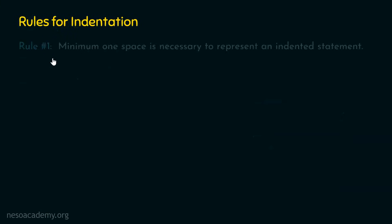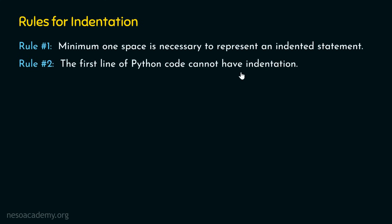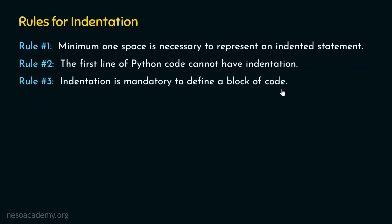Following are the rules of indentation. Rule one: minimum one space is necessary to represent an indented statement. You don't need to add four spaces every time — one space is sufficient, but it is mandatory. Rule two: the first line of Python code cannot have indentation; every Python program's first line must not be indented. Rule three: indentation is mandatory to define a block of code in Python.